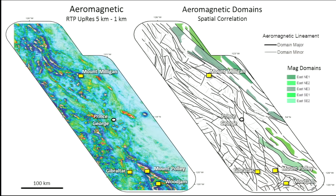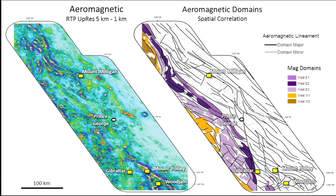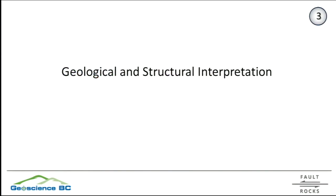The next stage of interpretation is to spatially correlate these different domains with the rocks they cover. The eastern set of domains covers rocks of the ancient North American margin. The central domains cover rocks of Quesnel mainly, and these are where we are most interested in. We can already see a long-strike continuation of the Mount Milligan and Mount Polly–Woodjam domains going into the till beneath the sediments. Further west, we have mainly two types of domains covering Cache Creek rocks and also Nechako Basin rocks. The idea now is to take those lineaments and provide, in a broad way, a first step on geological and structural interpretation.